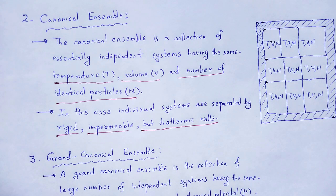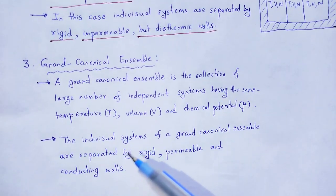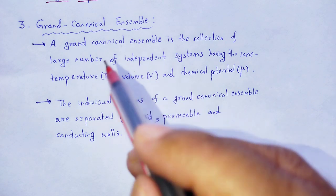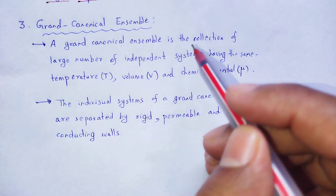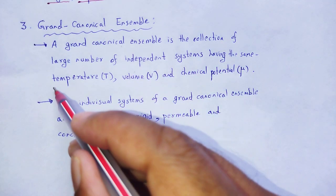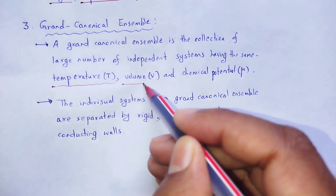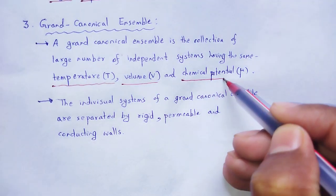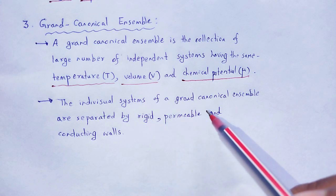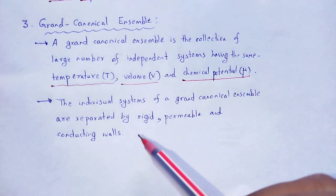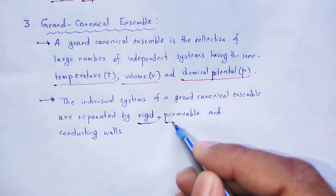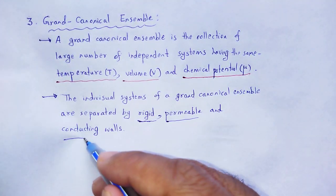Next type of ensemble: grand canonical ensemble. A grand canonical ensemble is a collection of large number of independent systems having the same temperature, volume and chemical potential. The individual systems of a grand canonical ensemble are separated by walls that are rigid, permeable and conducting.